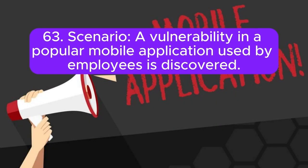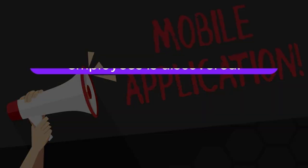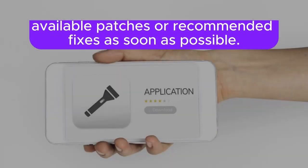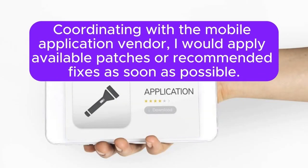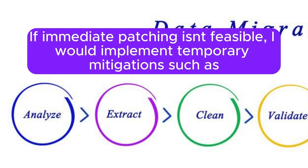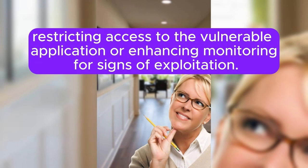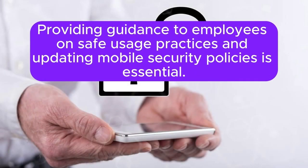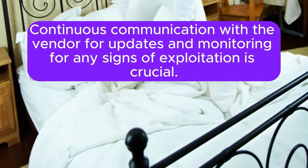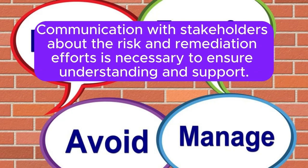Scenario 63: A vulnerability in a popular mobile application used by employees is discovered. How do you address this? I would assess the impact of the vulnerability on our employees and organization. Coordinating with the mobile application vendor, I would apply available patches or recommended fixes as soon as possible. If immediate patching isn't feasible, I would implement temporary mitigations such as restricting access to the vulnerable application or enhancing monitoring for signs of exploitation. Providing guidance to employees on safe usage practices and updating mobile security policies is essential. Continuous communication with the vendor for updates and monitoring for any signs of exploitation is crucial.